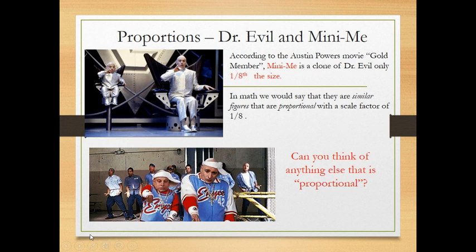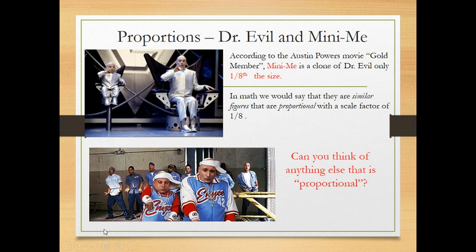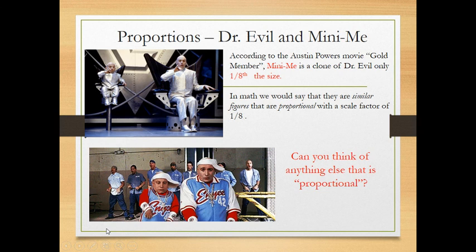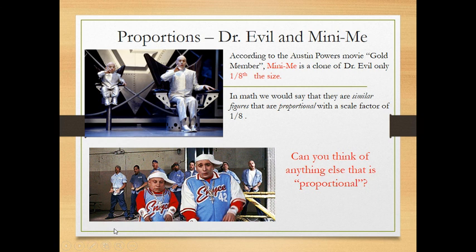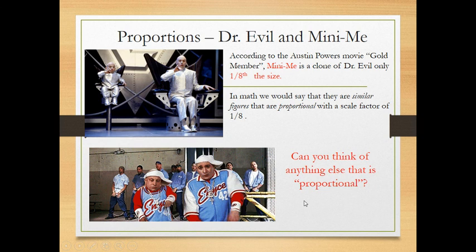According to the Austin Powers movie Goldmember, Mini-Me is a clone of Dr. Evil, only one-eighth the size. This idea represents a proportion. In math, we would say that they were similar figures that are proportional with a scale factor of one-eighth. Can you think of anything else that is proportional?